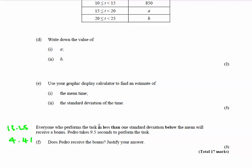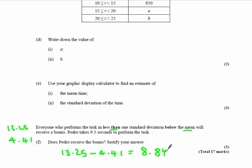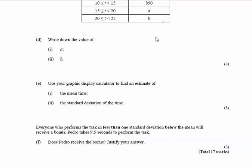The final part says everyone who performs the task in less than one standard deviation below the mean receives a bonus. Pedro takes 9.5 seconds. The mean is 13.25, and one standard deviation below that is 13.25 minus 4.41, which equals 8.84. Pedro's time of 9.5 seconds is not below 8.84, so the answer is no — Pedro does not receive a bonus. And that's cumulative frequency curves in a nutshell.